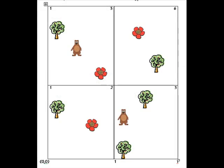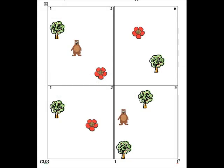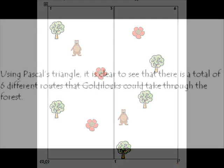Goldilocks had many different options of routes to complete her walk through the forest. All of these options can be demonstrated in Pascal's Triangle. Using Pascal's Triangle, it's clear to see that there is a total of six different routes that Goldilocks could take through the forest.